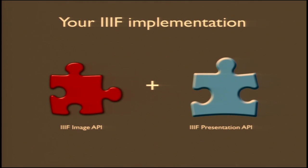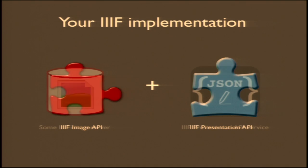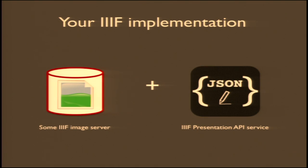Ultimately, if you want to use IIIF, you need two core things: the image API and the presentation API. You need some sort of image server — maybe you host it, or maybe you're using one of the vendors that are IIIF compliant. And then you need some sort of presentation API service, which is some sort of server exposing that limited metadata, likely coming from your catalog record itself. If you have those two things, you can start to use any of the viewers that have been built for the community, and you can start to experience IIIF on your own.